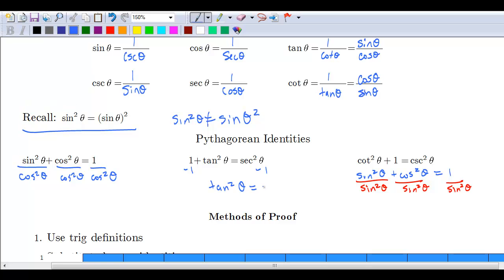You can subtract one over to the other side, so you can get that tangent squared theta is equal to secant squared theta minus one. Likewise here, you could subtract one over and get that cotangent squared is equal to cosecant squared theta minus one.